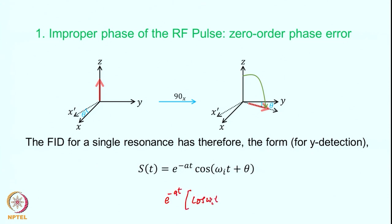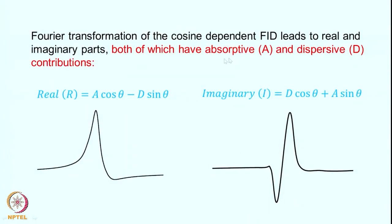Expanding this function: e^(−at)·[cos(ω_i·t)·cos θ − sin(ω_i·t)·sin θ]. So even when measuring the y-component, it has a cosine(ω_i·t) term and a sine(ω_i·t) term. When you Fourier transform this, there will be a mixture of absorptive and dispersive contributions — the cosine leads to absorptive signal A and the sine leads to dispersive signal D, weighted by cos θ and sin θ respectively.